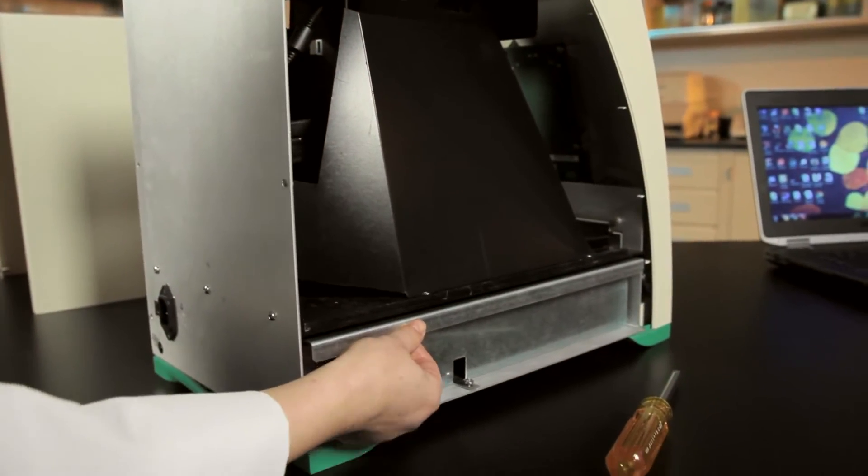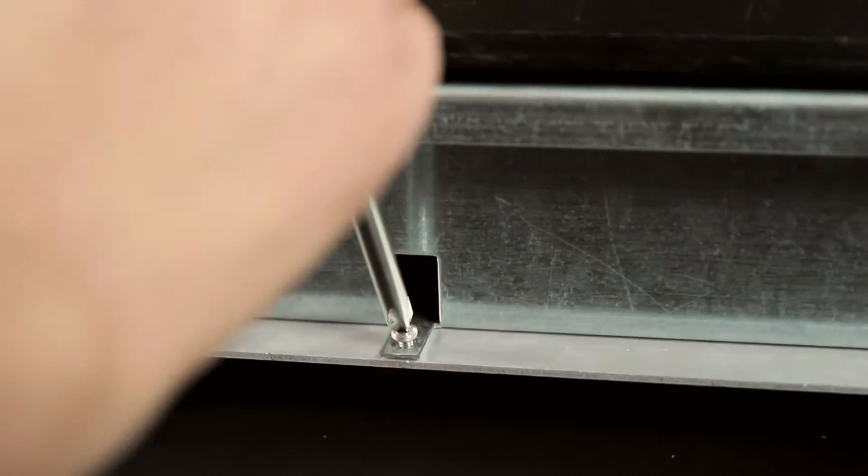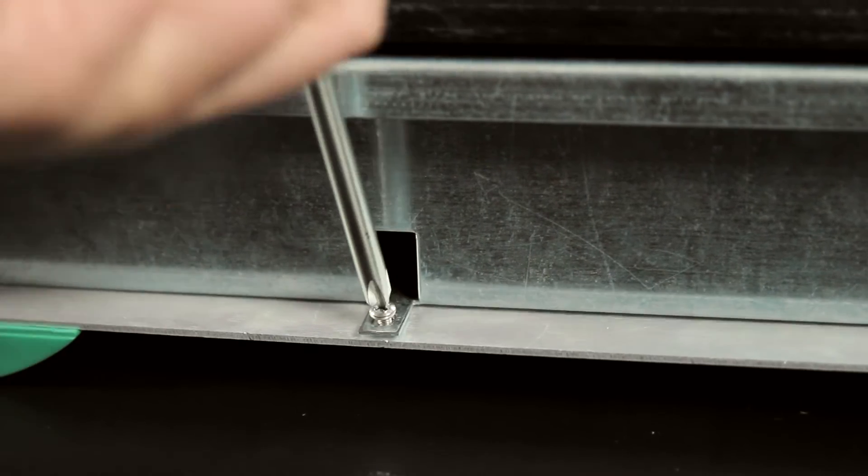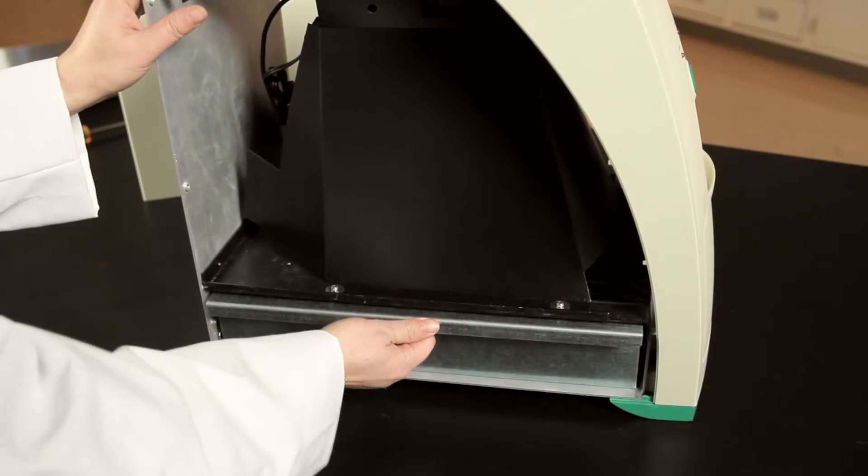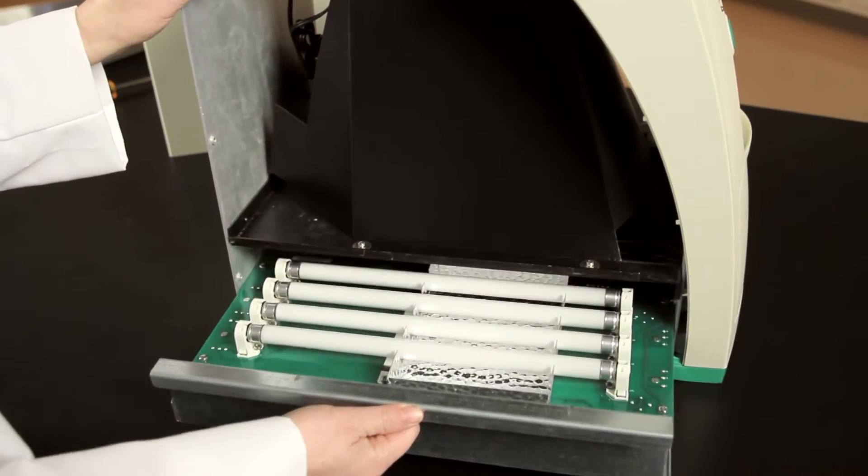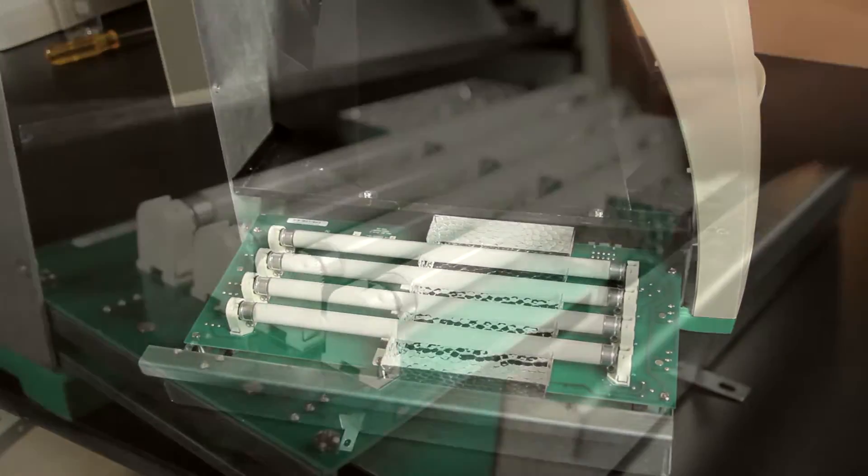Now locate and remove the screw holding the lamp assembly drawer in place. Slide the bulb drawer out until you see all four lamps. The drawer may stick at first, so you might have to give it a firm tug.